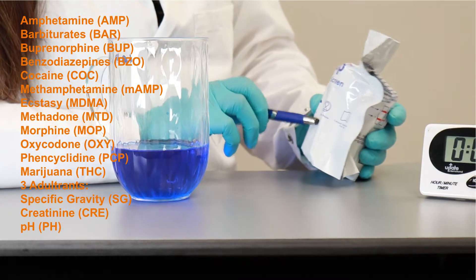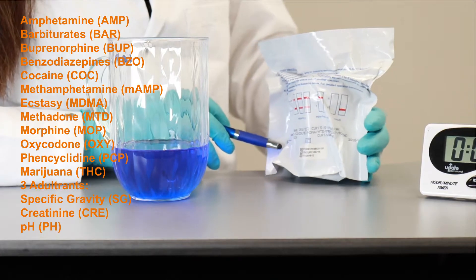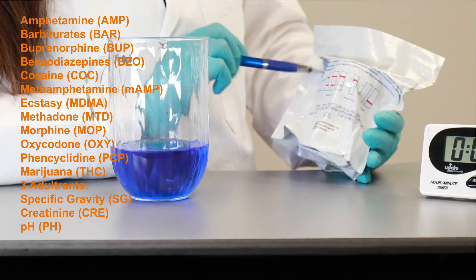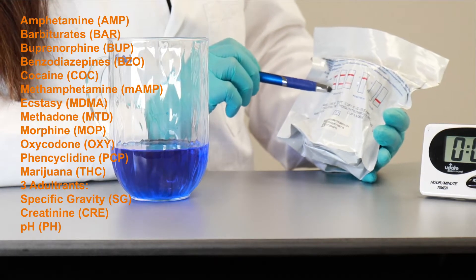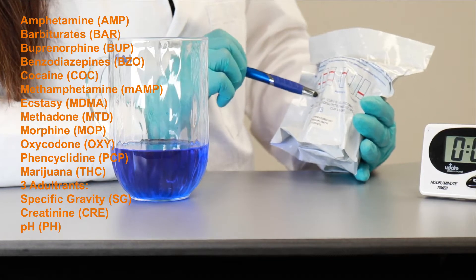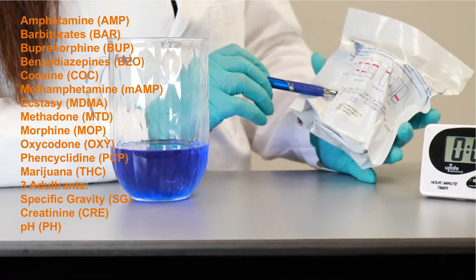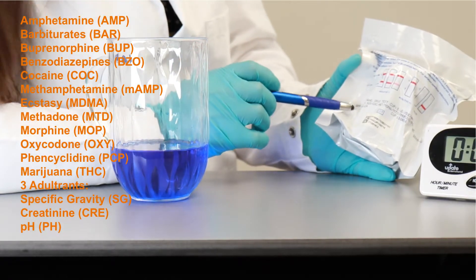They are not supposed to be reused. There are instructions in the back of the cup that I'm going to show you stepwise. These are really easy to follow. And after the test is done, these are the result indications that you can read: negative, positive, and invalid. So this particular drug test is a 12-panel cup. The 12 panels include all CLIA-waived drugs.